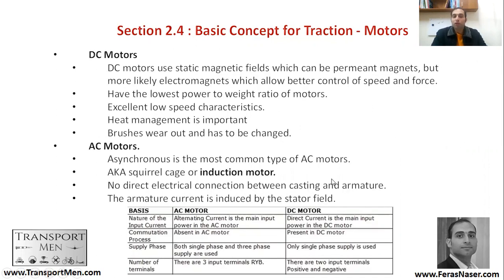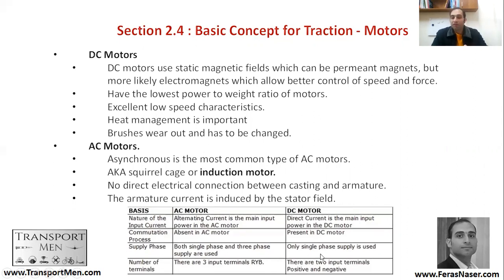Looking at this in more detail: the nature of input current — AC motors use AC, DC motors use DC. The commutation process is absent in AC motors, while there is a direct connection present in DC motors. For supply phase, AC motors can use both single-phase and three-phase supply, while DC motors use only single-phase supply.